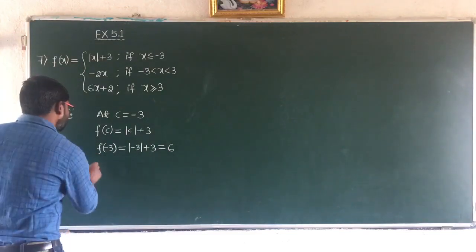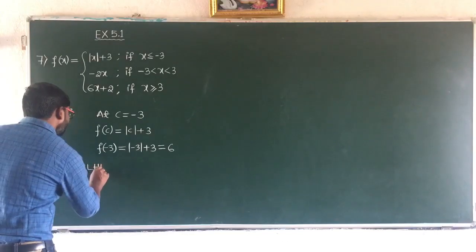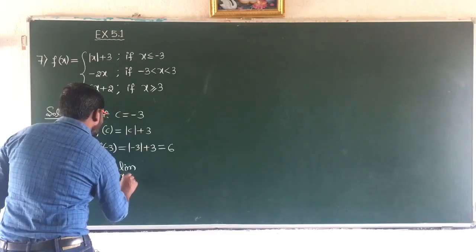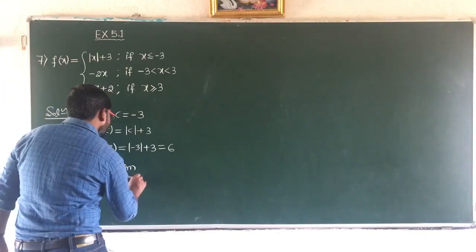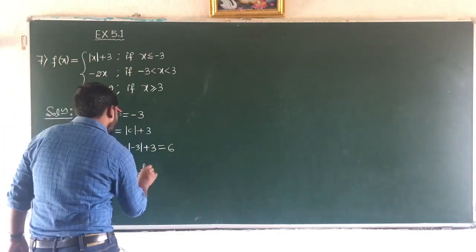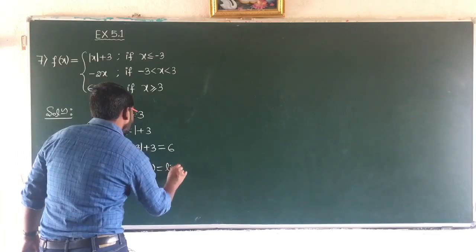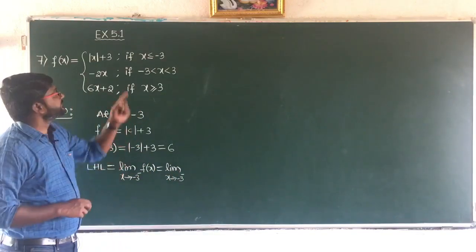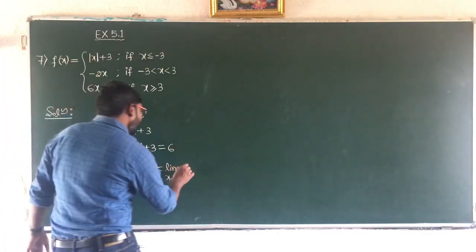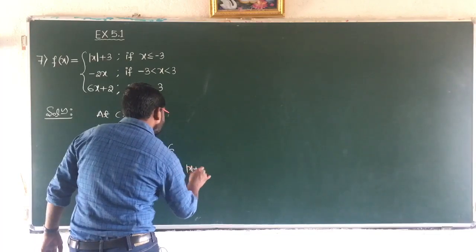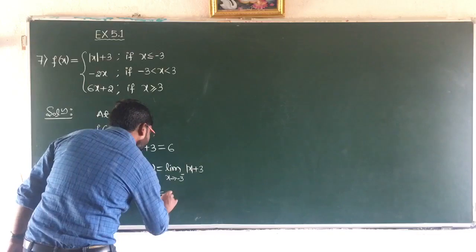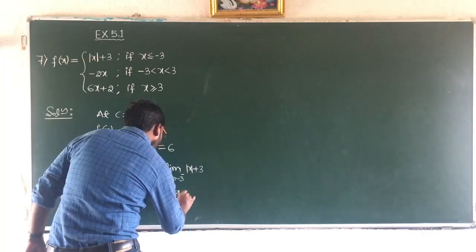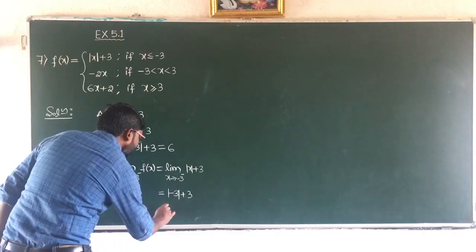For the left hand limit, LHL equals limit as x tends to minus 3 minus of f(x). Since minus 3 minus means less than minus 3, the function is mod(x+3). Applying the limit, mod(minus 3 plus 3) gives mod(minus 3) which is plus 3, and 3 plus 3 is 6. So LHL equals 6.